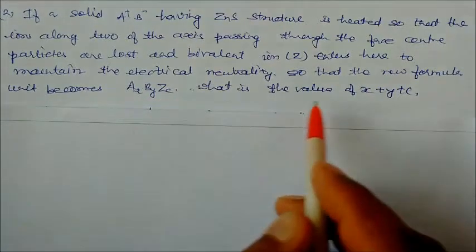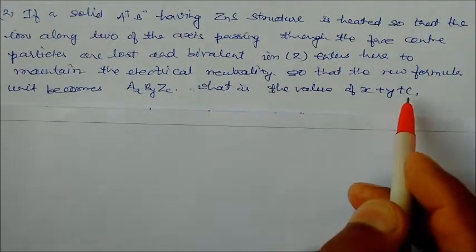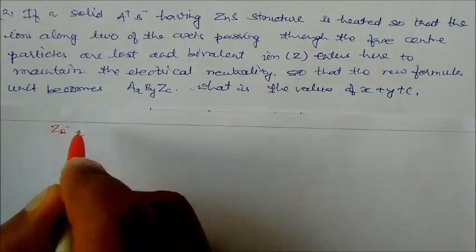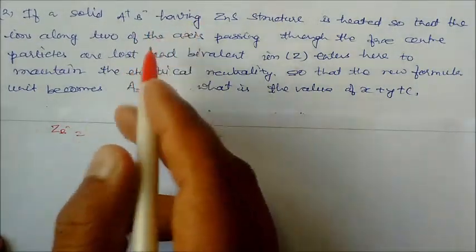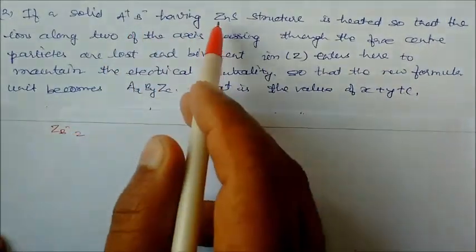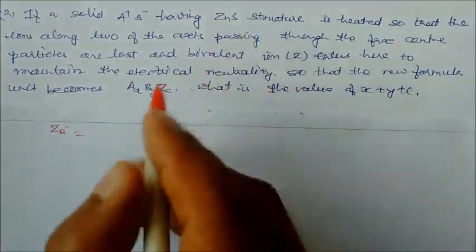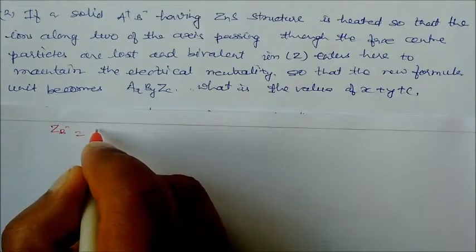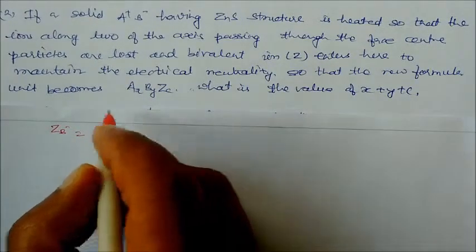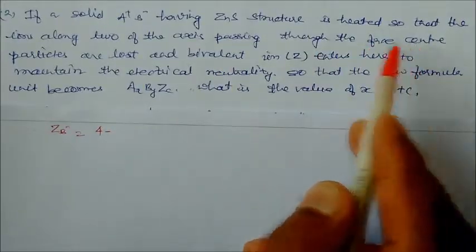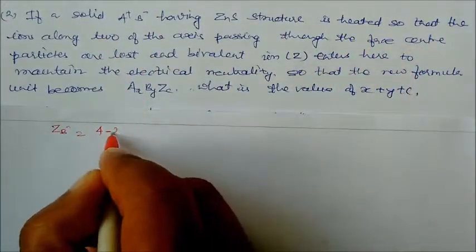What is the value of x+y+z? For B-, the total atoms in zinc sulfide, which has a diamond structure, at the corners is 4. Then you have to remove 2 from the two axes through the face centers, so you remove 2 atoms.